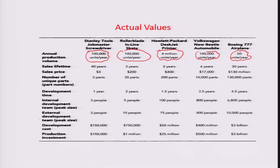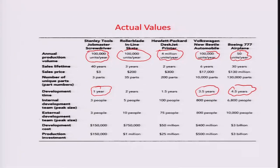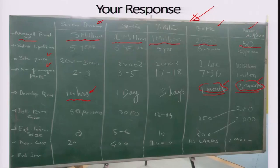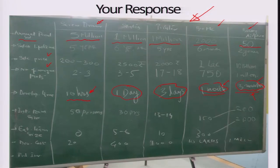When we talk about development time, a Boeing airplane takes about close to 4.5 to 5 years to get developed, whereas a Volkswagen Beetle takes about 3.5 years. A stainless steel screwdriver will actually take about 1 year to develop and come into production. The estimates given by the work group were quite off-centered, particularly because they mentioned 3 months to be the development time of an airplane. This gives an idea of the gauging behind different products by a general group of audience untrained in the area of product design.